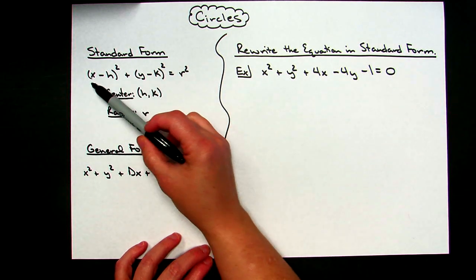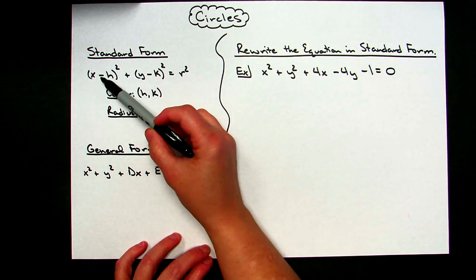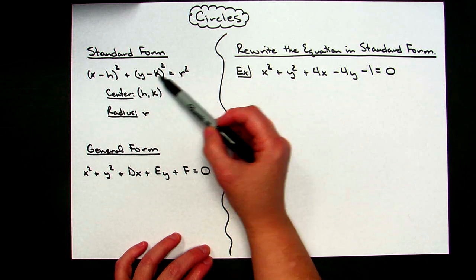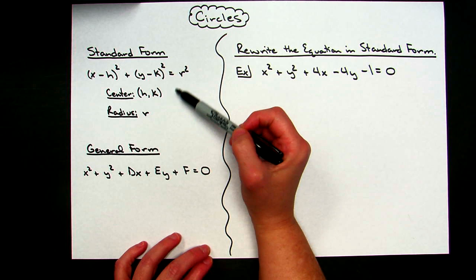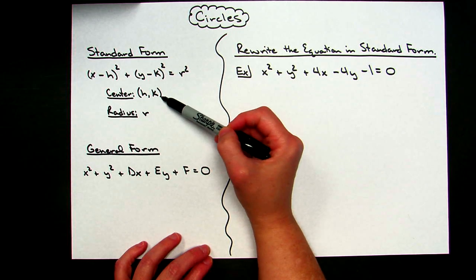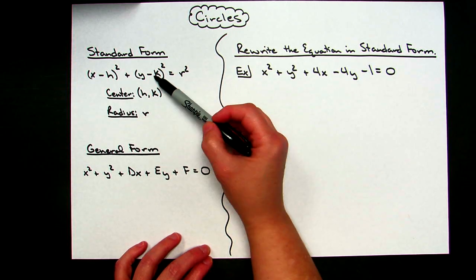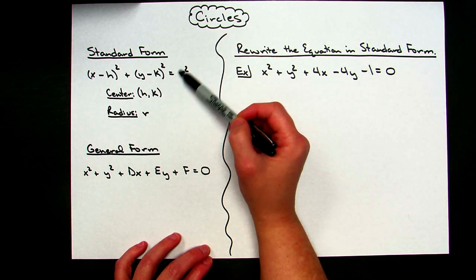Your standard form is x minus h quantity squared plus y minus k quantity squared equals the radius squared. In this form, this is a handy form because real quickly you can tell what your center is by simply pulling out your h and k, and then you can also easily see what your radius is.